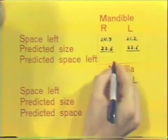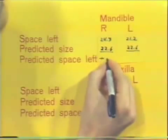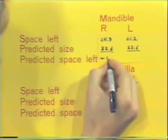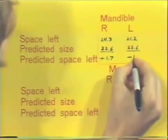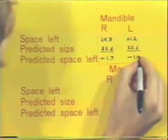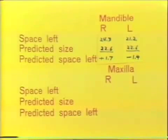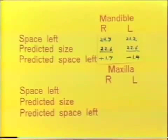The final step in the mixed dentition analysis is to predict the space left. On the right side, it is a positive 1.7 millimeters. However, on the left in our patient, it is a negative 1.4 millimeters. This means that on the patient's right side, there is 1.7 millimeters of space left over after these three teeth erupt, but on the left side, the child is 1.4 millimeters short of space.